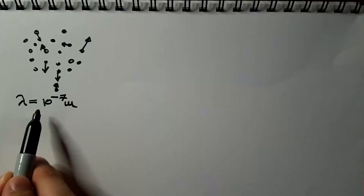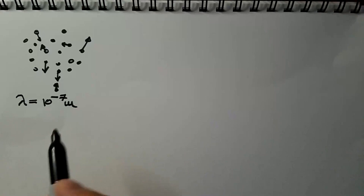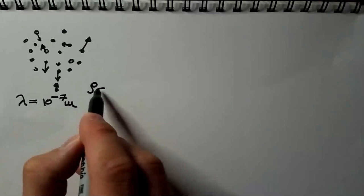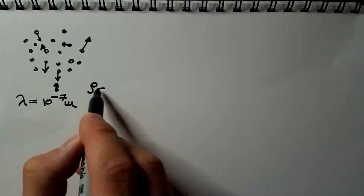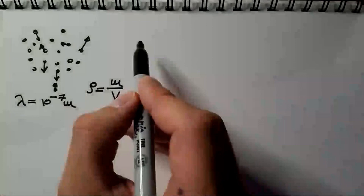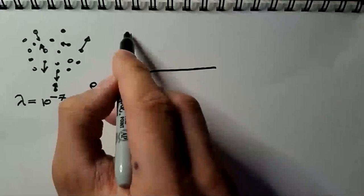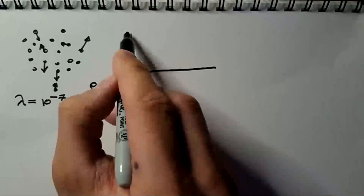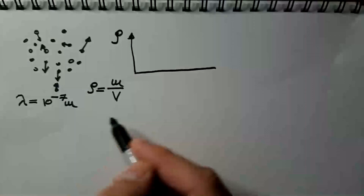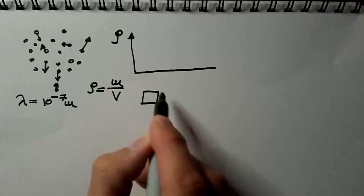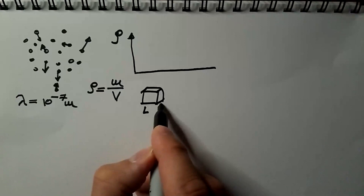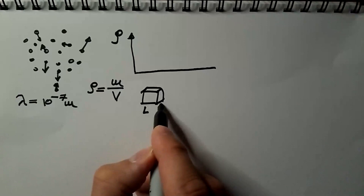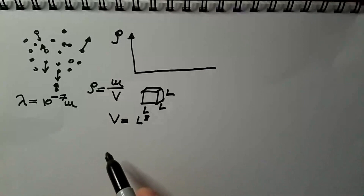Each molecule takes about 10 to the power of 7 meters before colliding with another molecule. Now, we also know that we can define density of material as mass of that material over volume. So, what I will plot here schematically is on the y-axis, I will have density, and on the x-axis, I can have volume, but I will take a cube. I will have this cube, it's a three-dimensional object, that has side L, width L and height L. So, the volume of this cube is L to the power of 3. So, instead of putting volume here, I can just put length, or the side of this cube.